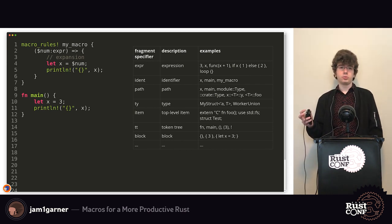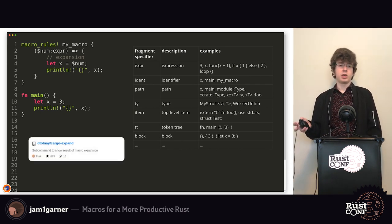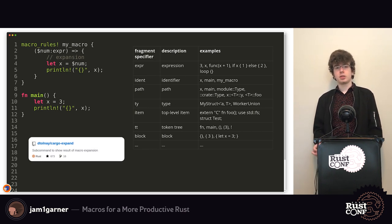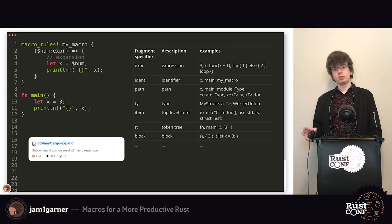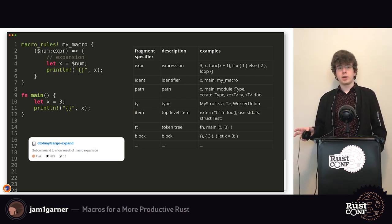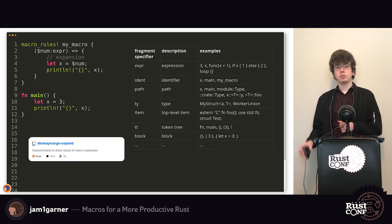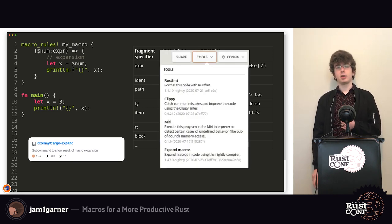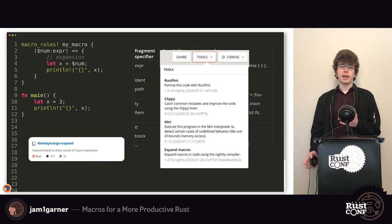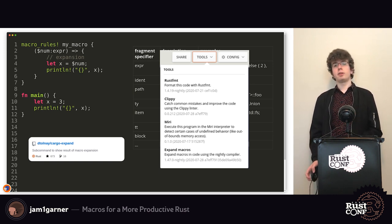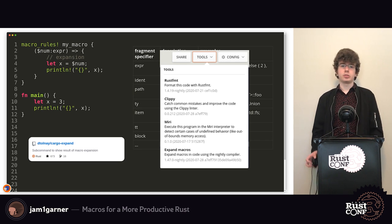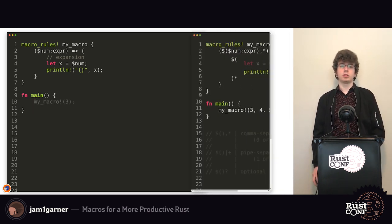If you want to expand things on your own, there are two great resources. There's cargo-expand, a cargo subcommand made by David Tolnay, which lets you see what your macro expands into. You also have the ability under the Rust Playground, at the bottom of the tools section, to expand your macros.